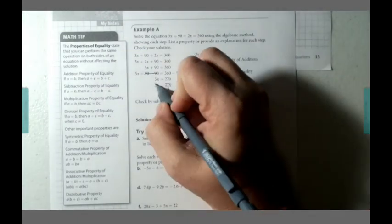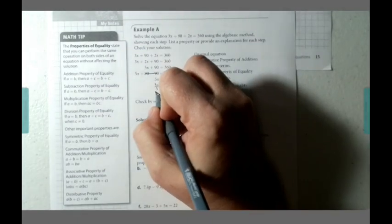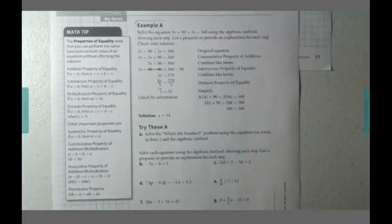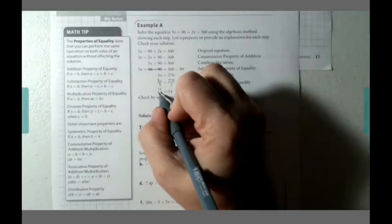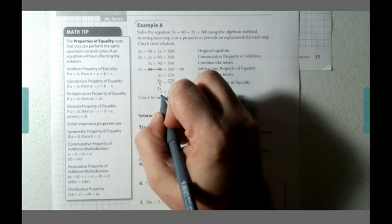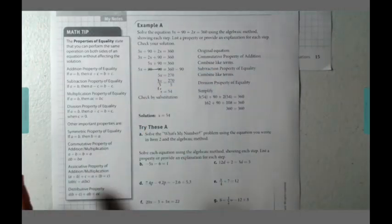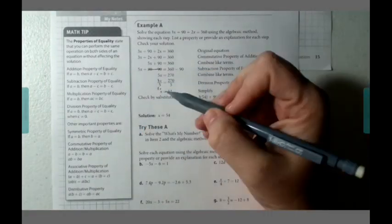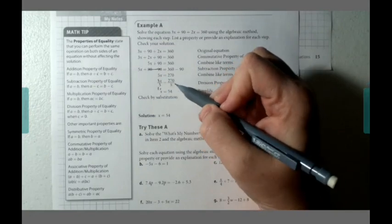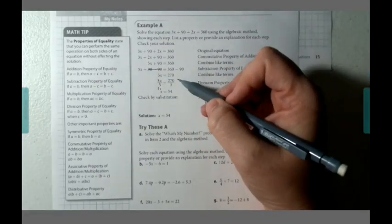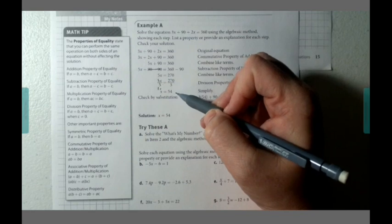Because 5 divided by 5 is actually going to be 1x. There's no need for us to write the 1 in front of the x. So when we go to write it in our final answer, we'll actually just put x all by itself. But whatever we do to one side, remember, we do have to do to the other. So 270 divided by 5 was 54.